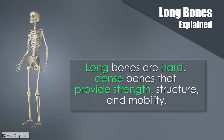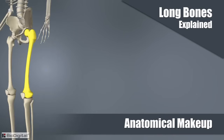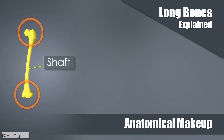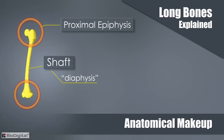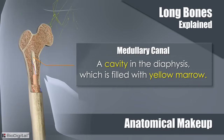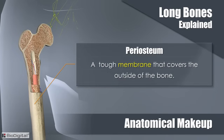Long bones are hard, dense bones that provide strength, structure, and mobility. An example is the femur, or thigh bone. A long bone has a shaft and two ends. The shaft is known as the diaphysis, and the two ends are called the proximal epiphysis and the distal epiphysis. The medullary canal is a cavity in the diaphysis which is filled with yellow marrow. The endosteum is a membrane that lines the medullary canal and keeps the yellow marrow intact. The outside of the bone is covered with a tough membrane called the periosteum.